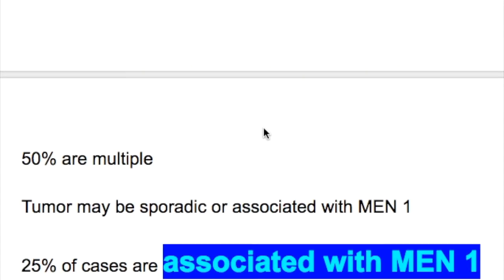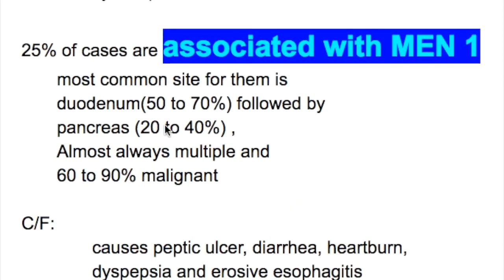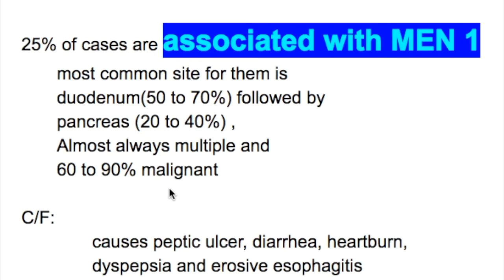Sixty percent of gastrinomas are malignant; 50% are multiple. The tumor may be sporadic or associated with multiple endocrine neoplasia (MEN) type 1 — 25% of cases are associated with MEN type 1. For MEN type 1-associated gastrinomas, the most common site is the duodenum (50–70% of cases), followed by the pancreas (20–40%). These are almost always multiple, and 60 to 90% of them are malignant.